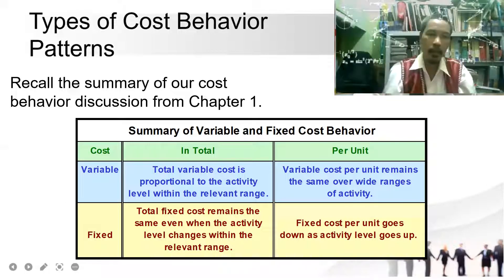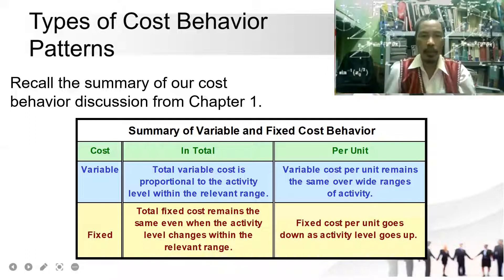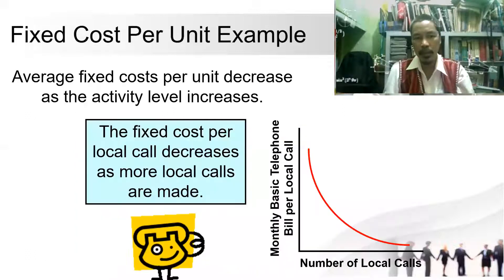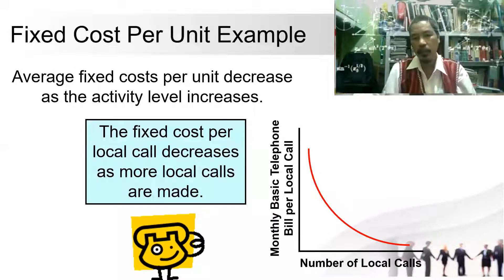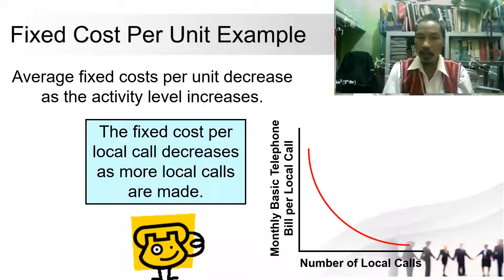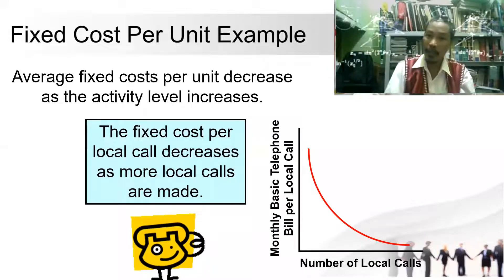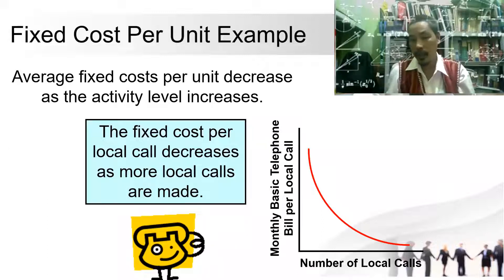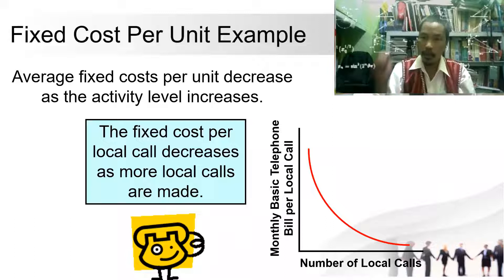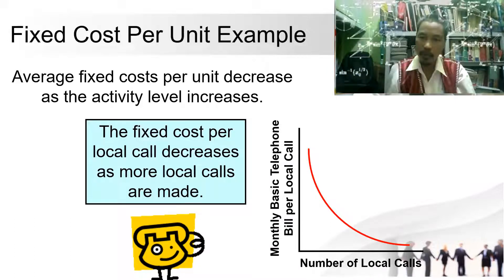Average fixed cost per unit decreases as activity level increases. For example, the fixed cost per local call decreases as more and more local calls are made, because you have a fixed monthly bill regardless of usage.